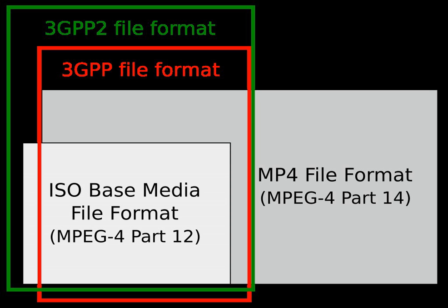MPEG has standardized a number of specifications extending the ISO Base Media File Format. The MP4 file format ISO/IEC 14496-14 defined some extensions to support MPEG-4 visual, audio codecs and various MPEG-4 systems features such as object descriptors and scene descriptions. The MPEG-4 Part 3 standard also defined storage of some audio compression formats. Storage of MPEG-1 audio in the ISO Base Media File Format was defined in ISO/IEC 14496-3-2001 AMD 3-2005. The Advanced Video Coding File Format ISO/IEC 14496-15 defined support for H.264, MPEG-4 AVC Video Compression.